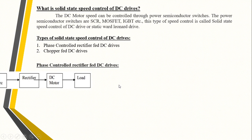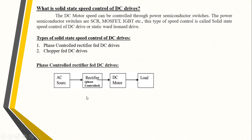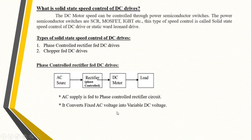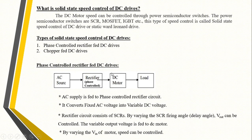This is the block diagram of phase-controlled rectifier fed DC drive. It consists of an AC source, a phase-controlled rectifier, a DC motor, and a load. AC supply is fed to the phase-controlled rectifier circuit, which converts fixed AC voltage into variable DC voltage. That variable DC voltage is then applied to the DC motor. This rectifier circuit consists of SCRs — silicon-controlled rectifiers — which are one type of power semiconductor switch in the thyristor family.